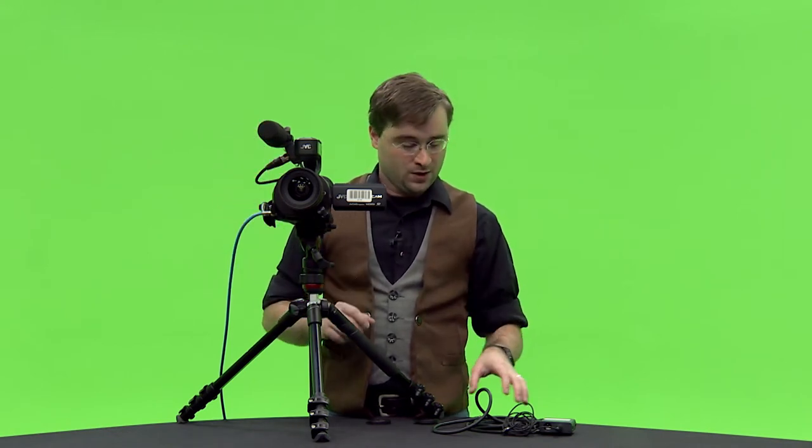On the side of the camera here there are two XLR inputs, input one and input two. Make sure your shotgun mic is plugged into input two and then what we will do is we will plug either a boom mic or a lavalier mic or a handheld or some other form of microphone into this input one and that's going to be our primary source of audio. So today I brought with me a lavalier mic.